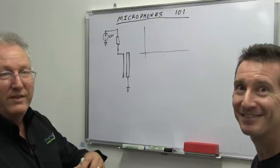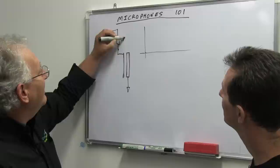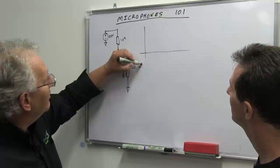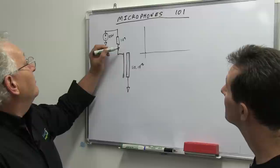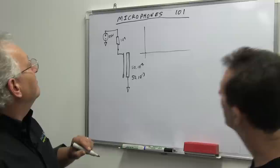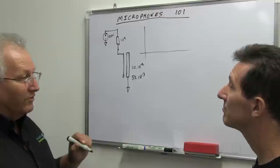Somebody out there can calculate the time constant. Let's do it here. Let's say we've got 10 to the 9 ohms there and let's say we've got 50 times 10 to the minus 12 farads there. That comes to about 50 times 10 to the minus 3 seconds. So 50 milliseconds time constant.